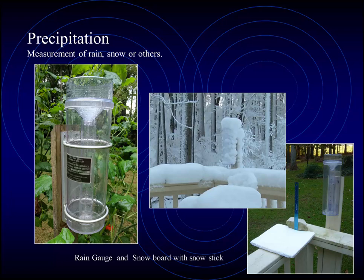Snow, on the other hand, may be a little more difficult to measure. A snowboard is a light-colored board elevated off the ground so any snow does not melt quickly. Then simply measure the depth with a ruler. Frequently, we also take a core sample of the snow, melt that, to see what its snow-water equivalent may be.